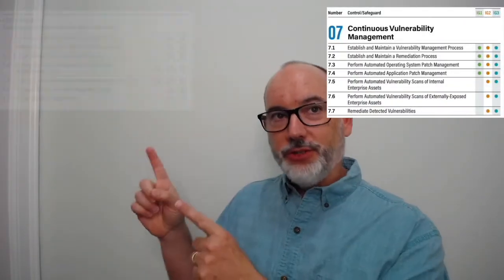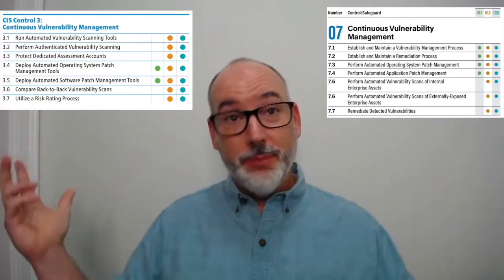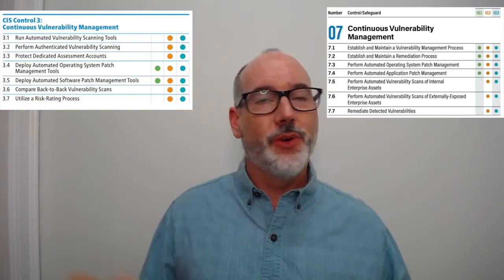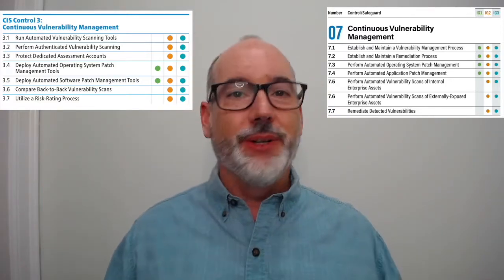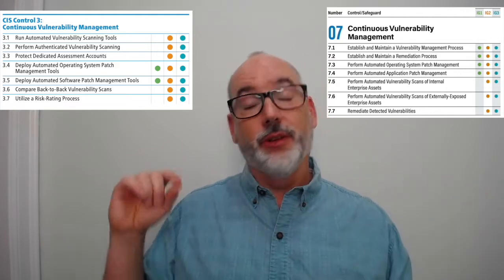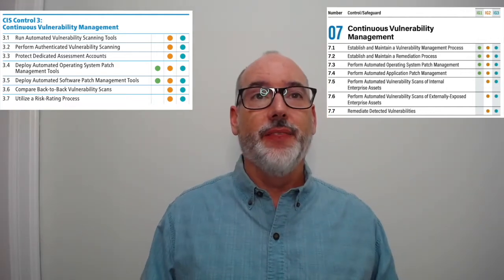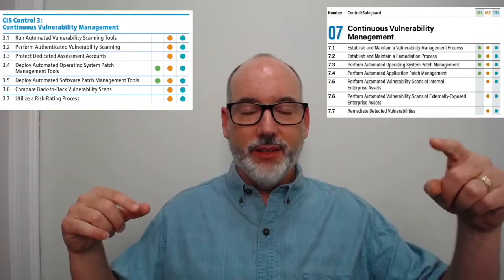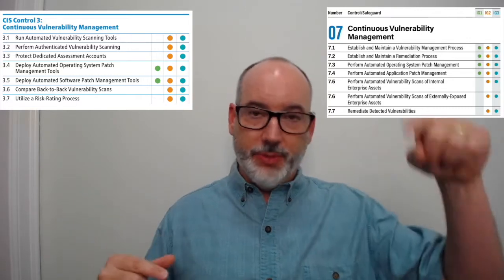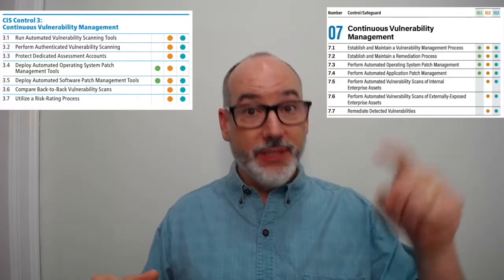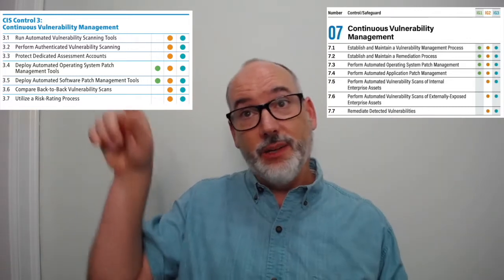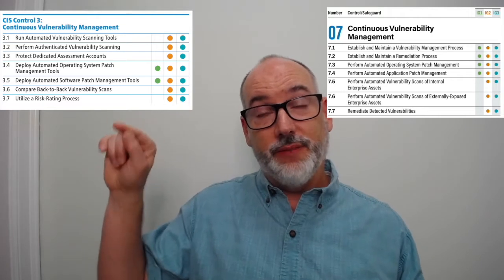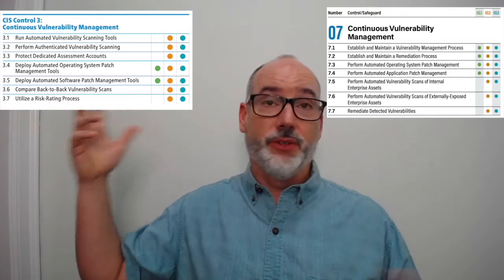Let's look at the safeguards — version 8 here and version 7 here. There's only one safeguard each, which makes it easy. Remember that we renamed sub-controls to safeguards, and we realigned the safeguards to be along the implementation groups. So it's nice and clean where you see 3.4 and 3.5 in version 7 are for implementation group 1.